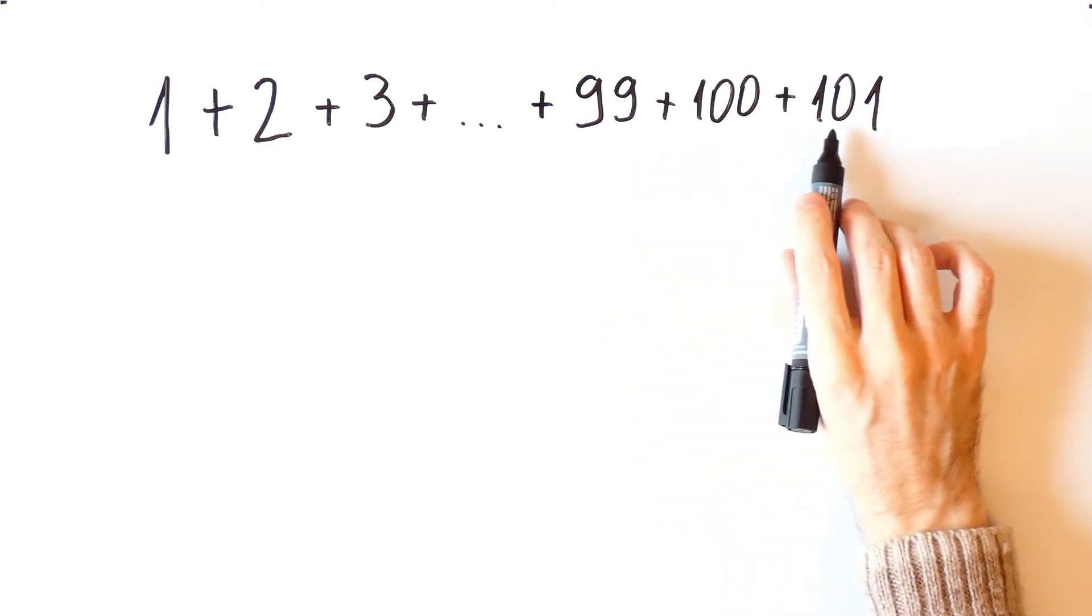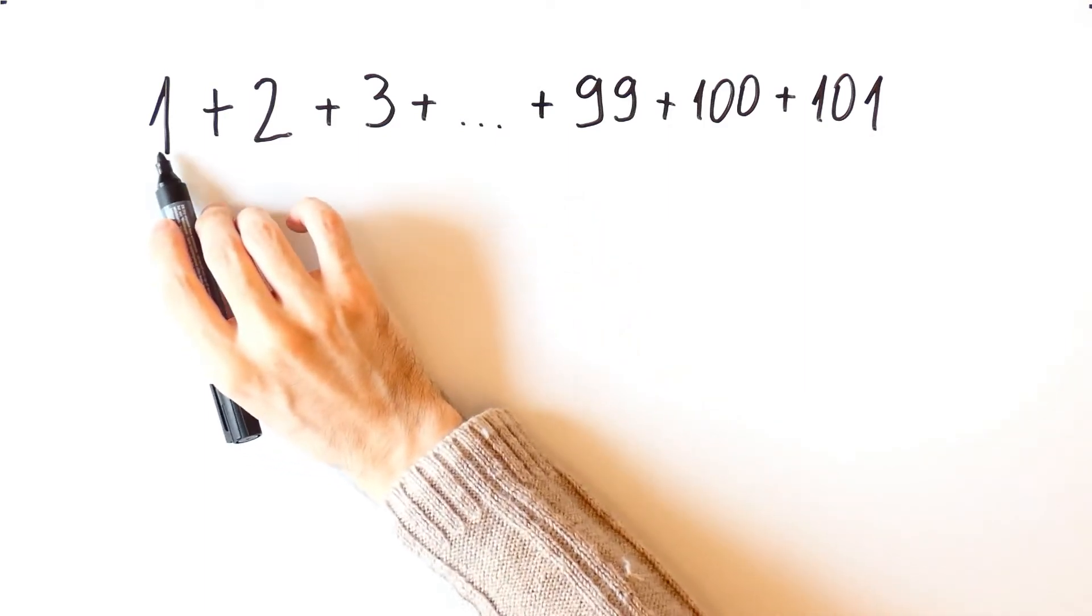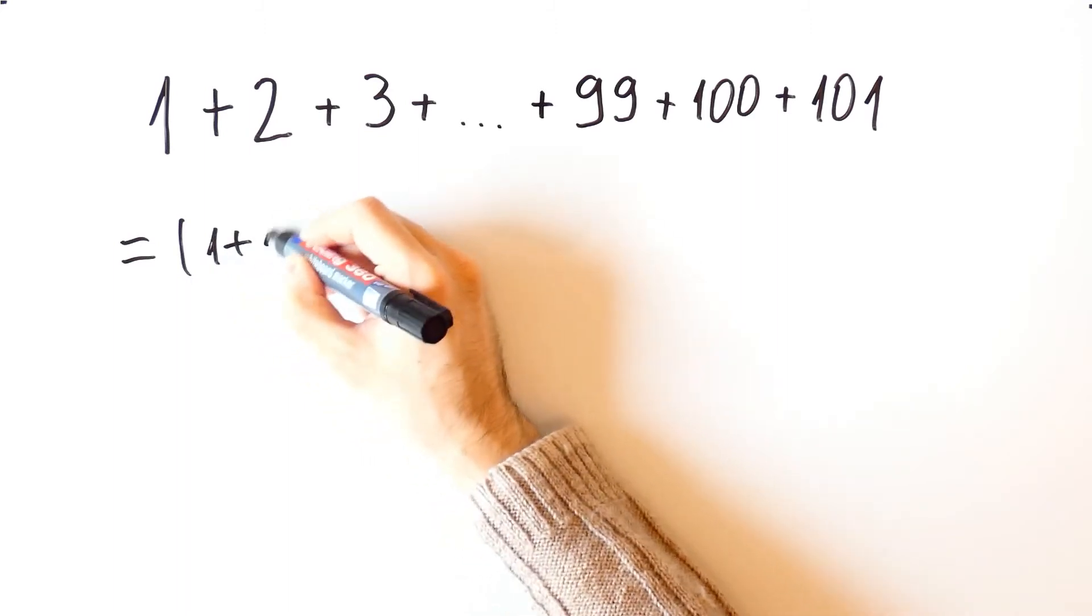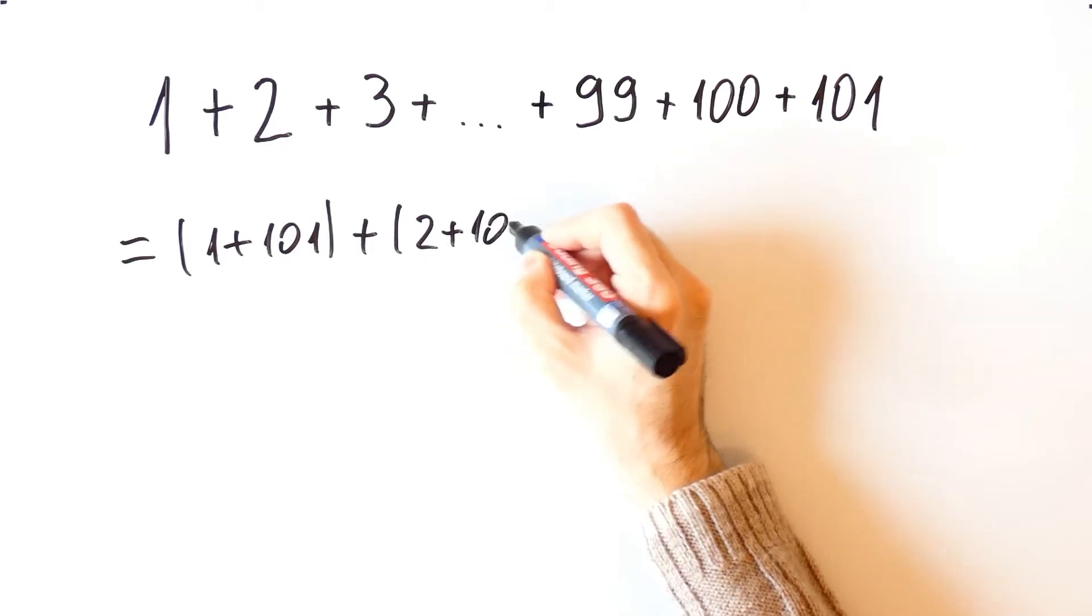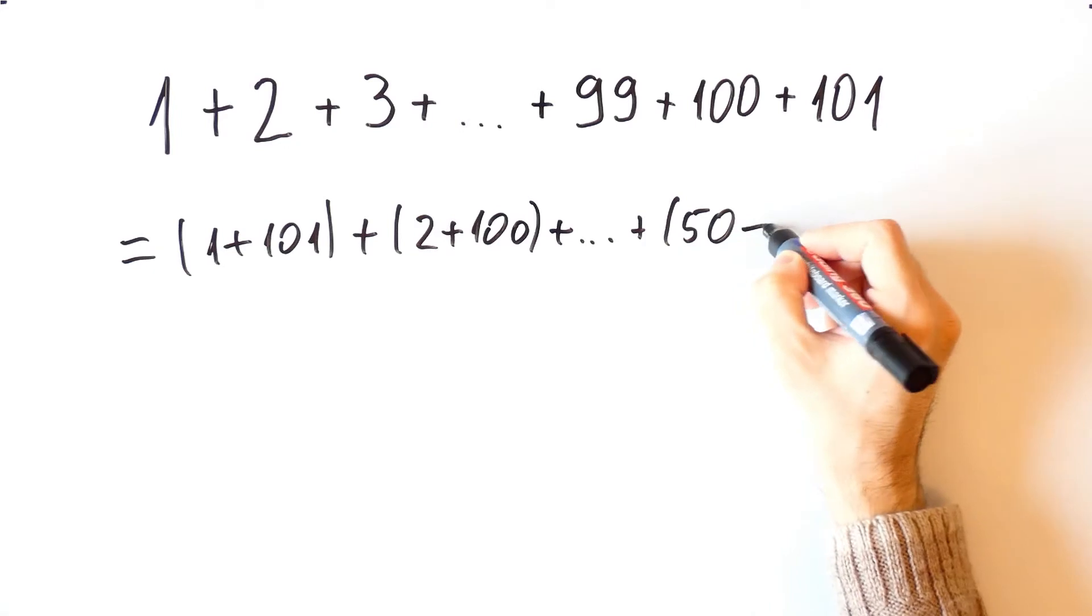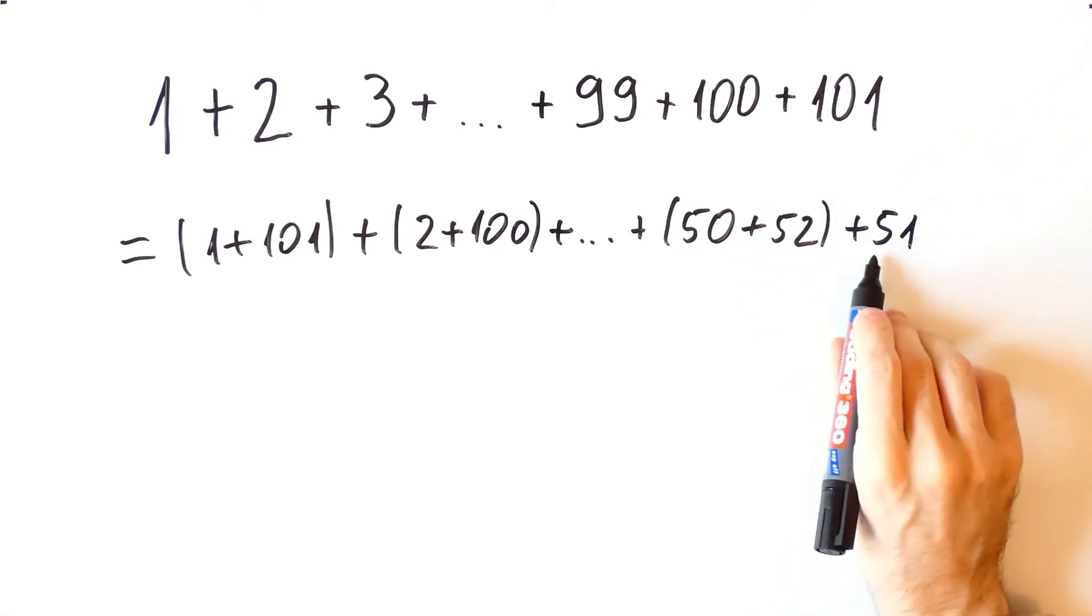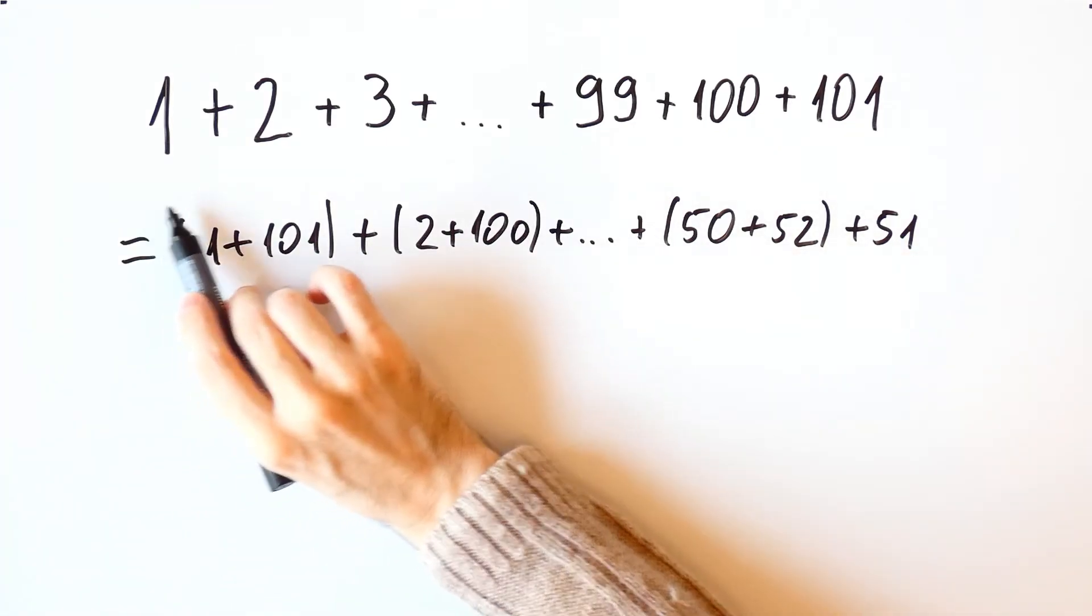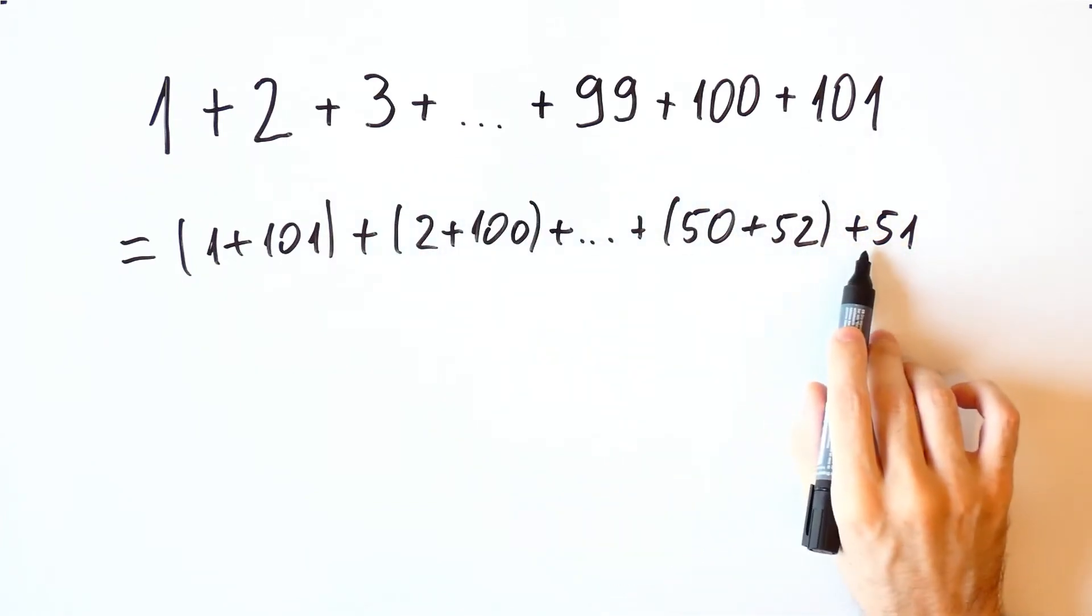Now suppose that we want to find the sum of the first 101 numbers. If we do as before and group the first and last number, so 1 and 101, and then 2 and 100, and so on, we would get to 50 plus 52. But 51 wouldn't be paired. This is easier to calculate than adding all 101 numbers, but we see that sometimes this method leaves us with a number that is unpaired.